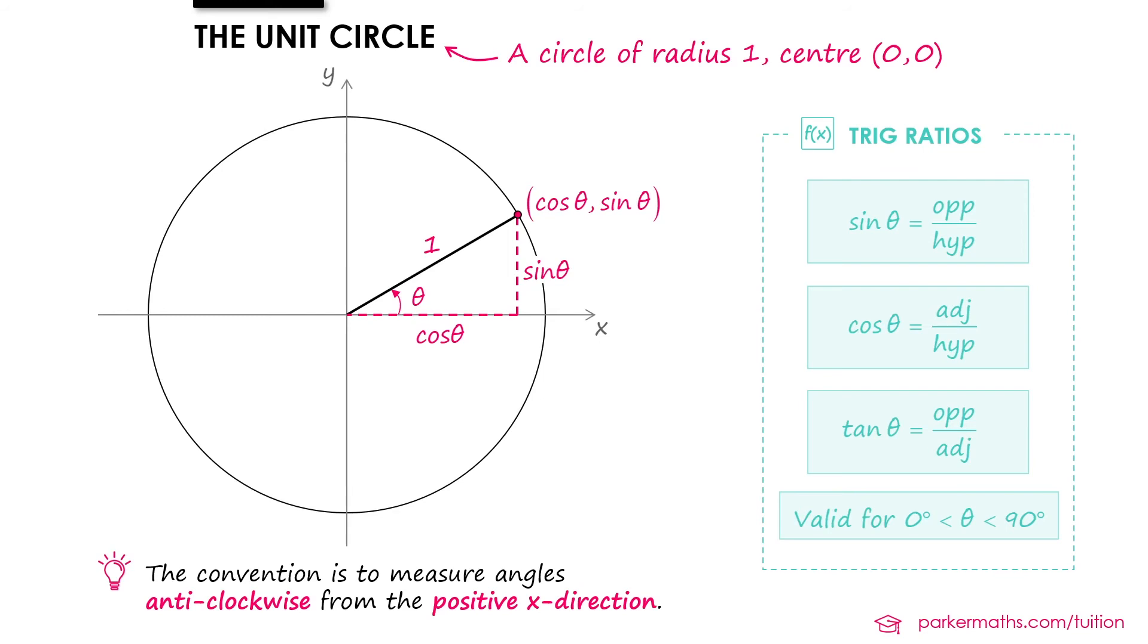And so rather than thinking of cos θ and sin θ in terms of sides in a right-angled triangle, we can think of them as the X coordinate and Y coordinate of a point on the unit circle. And that's great because it allows us to extend our understanding of what we mean by cos θ and sin θ to angles beyond the region 0 to 90 degrees. And that's what we're going to be looking at in the next few examples.